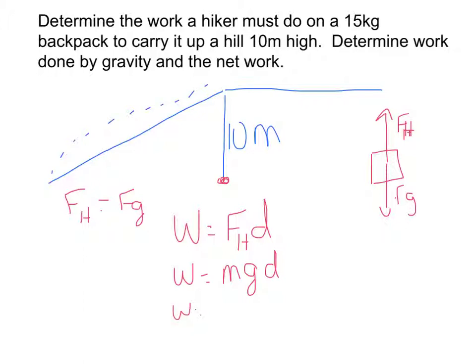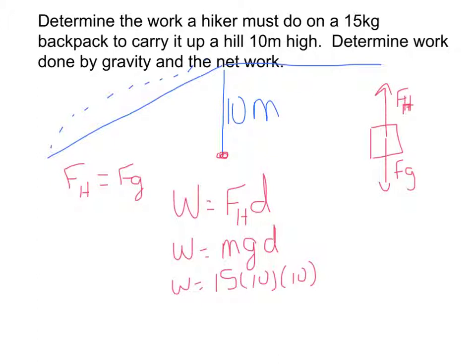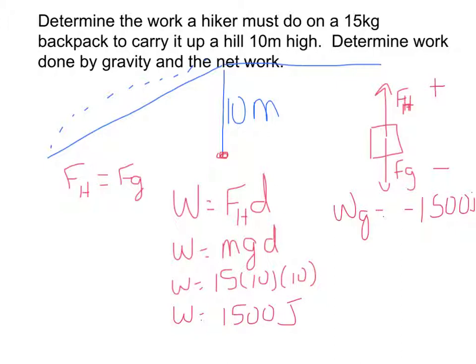So the work equals the mass of the backpack — 15 kg — times gravity (using 10) times the 10-meter height, giving 1500 joules. That's the work of lifting it up. The work done by gravity is the exact same magnitude but negative. So the net work equals 1500 plus negative 1500, which is zero.